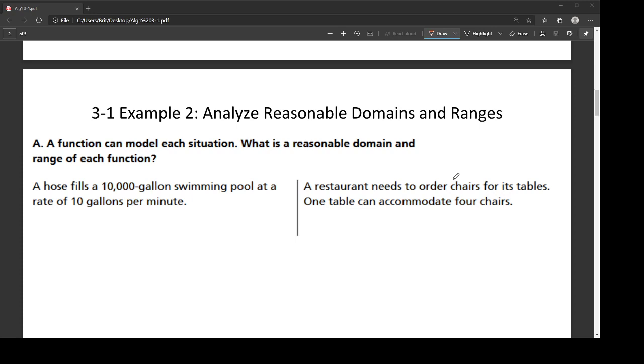So when we're looking at analyzing the domains and ranges, what we're doing is we're thinking about what are called constraints. So it's what is causing the domain to only be a certain number of values instead of every real number on the number line.